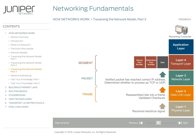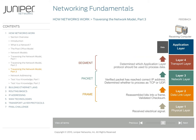If the transport layer is using TCP, it collects all the segments, reassembles the data, and sends an acknowledgement to the sending computer indicating that the data was received. If the sending computer does not receive the acknowledgement, it resends the segments. Next, the transport layer examines the port number and sends the data to the correct application layer protocol. The application layer protocol handles the data in whatever manner is specified by that specific protocol, so that it can be used as intended on the receiving computer.